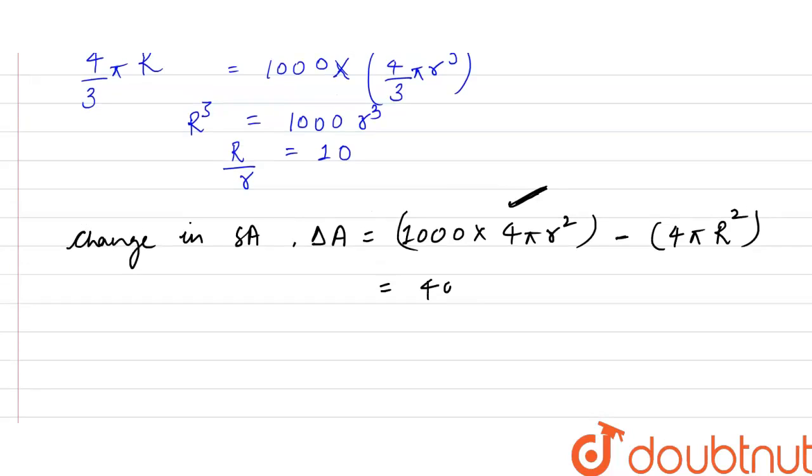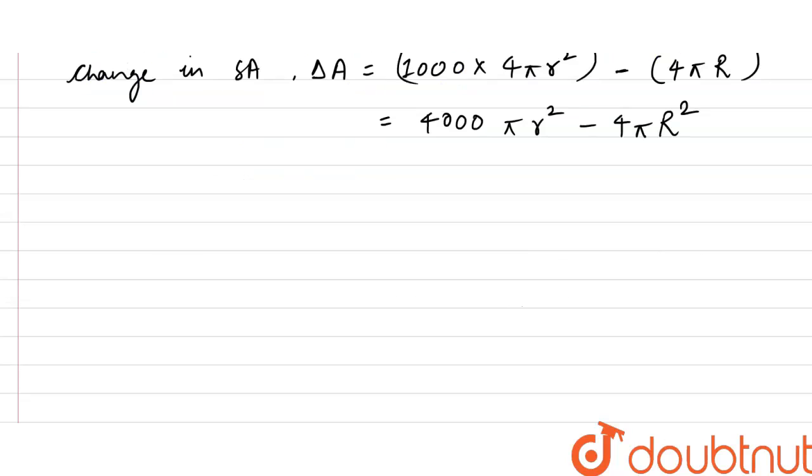This comes out to be 4000 pi small r square minus 4 pi capital R square, and this can be written as pi into 4000 r square minus 4 capital R square.